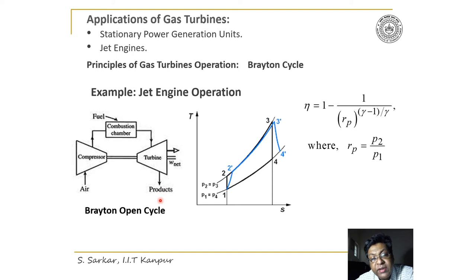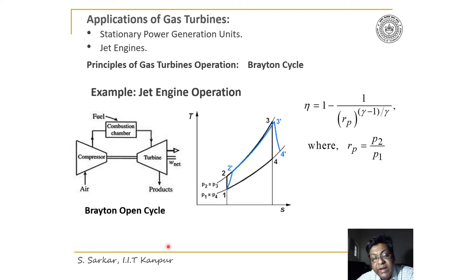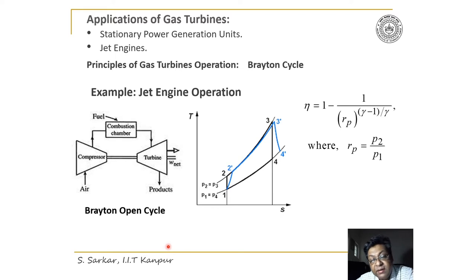In case of a power plant or power generation unit, the gas is fully expanded in the turbine. Part of the energy produced is extracted to run the compressor, and the remaining part is used to run the generator to produce power.